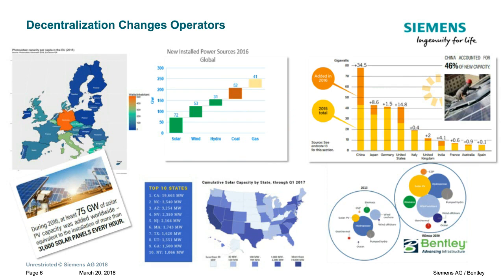When talking to utilities around the world, one thing they all agree on is that it is happening everywhere. Much of Europe has led the pace for years. Australia has areas in Queensland where residential rooftop solar penetration is sometimes over 40%. China and India are picking up, and in the US the train has left the station too. Last year, over 75% of new generation capacity worldwide was renewable, and much of it was distributed. Including the decommissioning of old power plants, the net new renewable share was over 90% globally.